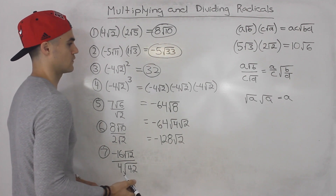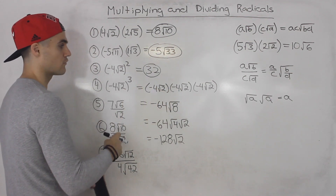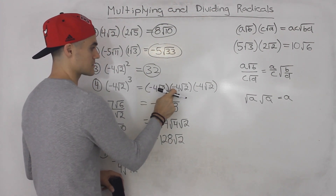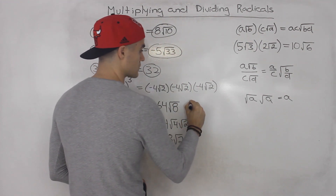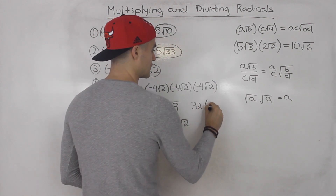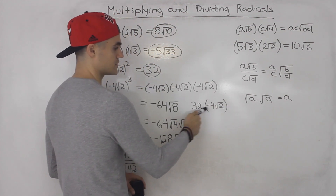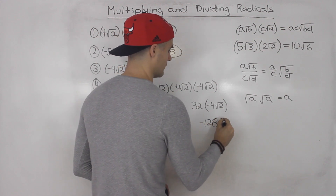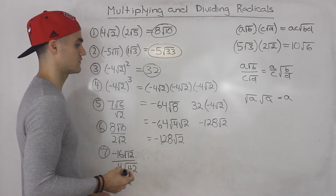√2 we can't simplify further. If we had taken the first two brackets and multiplied them out first, -4 times -4 is 16 and √2 times √2 is 2, giving 32. Then 32 times -4√2: 32 times -4 is -128, and the √2 stays the same. So either way, you get the same simplified answer of -128√2.